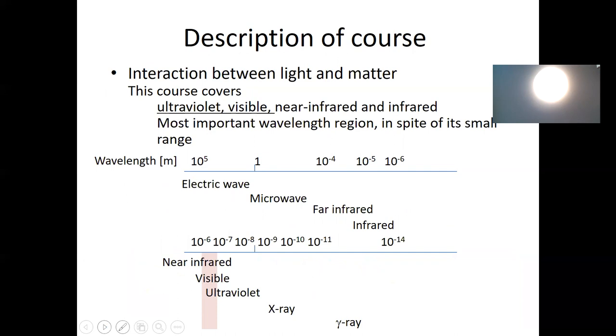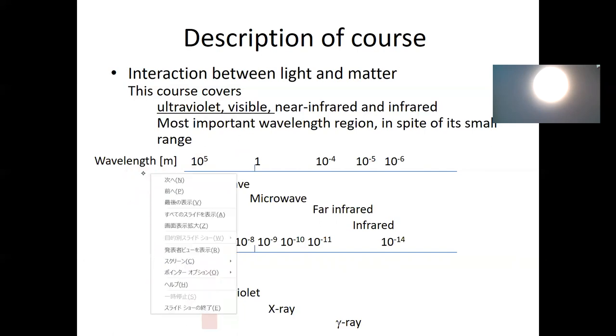Then, this course. This course basically covers the ultraviolet and visible light, and some of near-infrared light. But probably looking at this chart, you can notice that the wavelength is a region of ultraviolet and visible as a quite limited region in terms of the wavelengths.